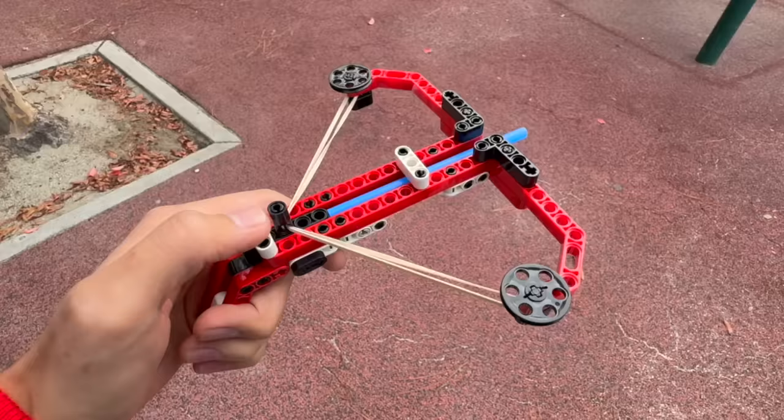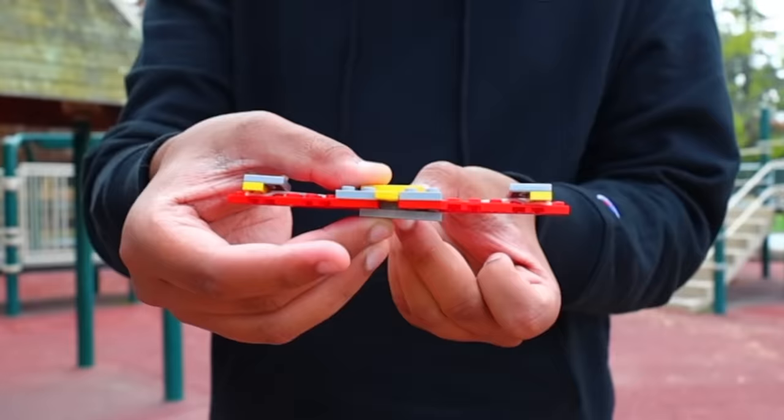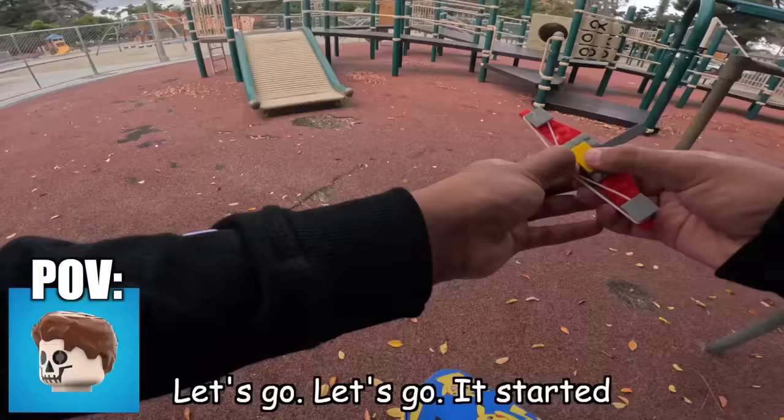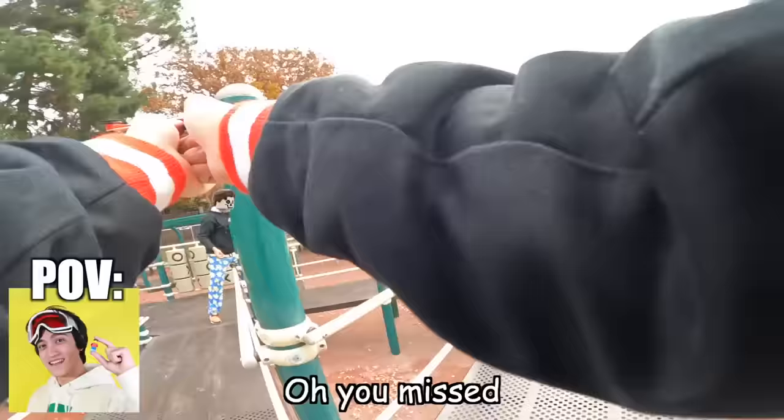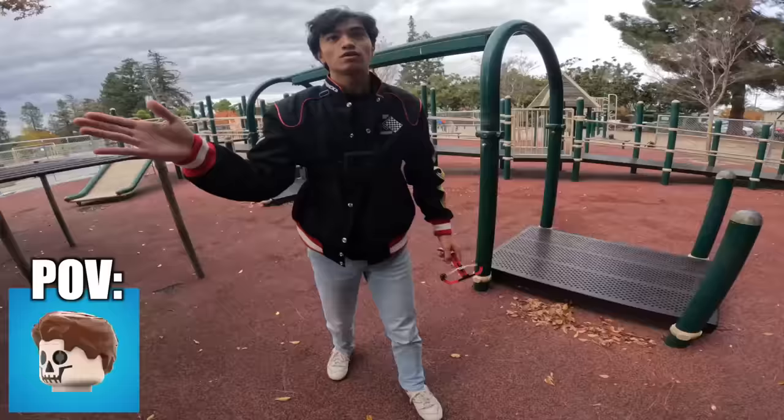For this first round, we're going to have a battle at this playground. I'll be fighting with the crossbow I made earlier, and Sacred built his very own mini Lego bow and arrow that shoots tile pieces. May the best man win. Three, two, one. Let's go, let's go. It started. I'm going to get the high ground. Crap, I missed. Oh, you missed. Come here, boy. I got you, I got you. All right. That's a dub.